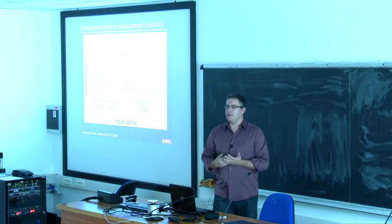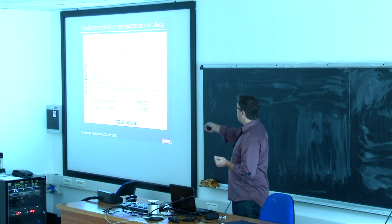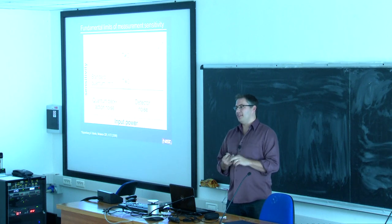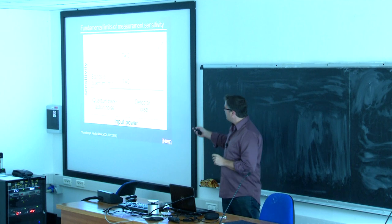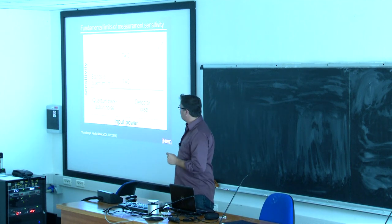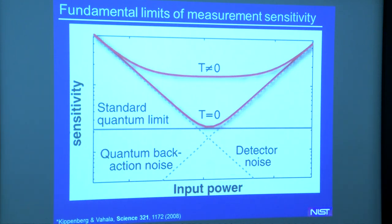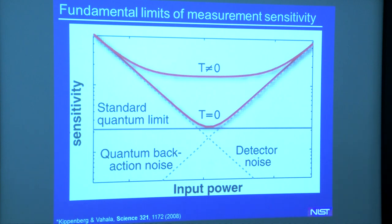This is the cartoon picture most people show when they talk about the SQL — the standard quantum limit. The standard quantum limit can mean a lot of things to different people, so I'll be very specific. In the cavity optomechanics community, when we draw this plot, the x-axis is something about our measurement strength — usually the power of our coherent state used to probe the system. On the y-axis is the total sensitivity of the thing you're measuring, here the mechanical degree of freedom. From the output of your measurement, every source of noise traces out this kind of curve.